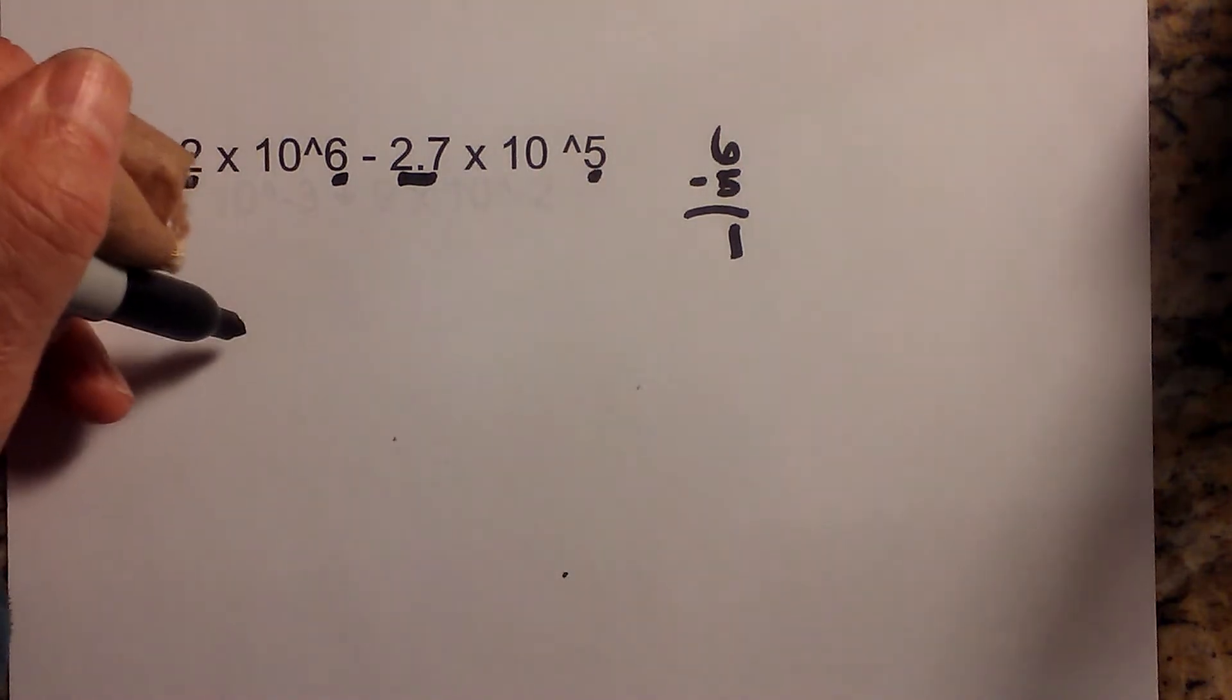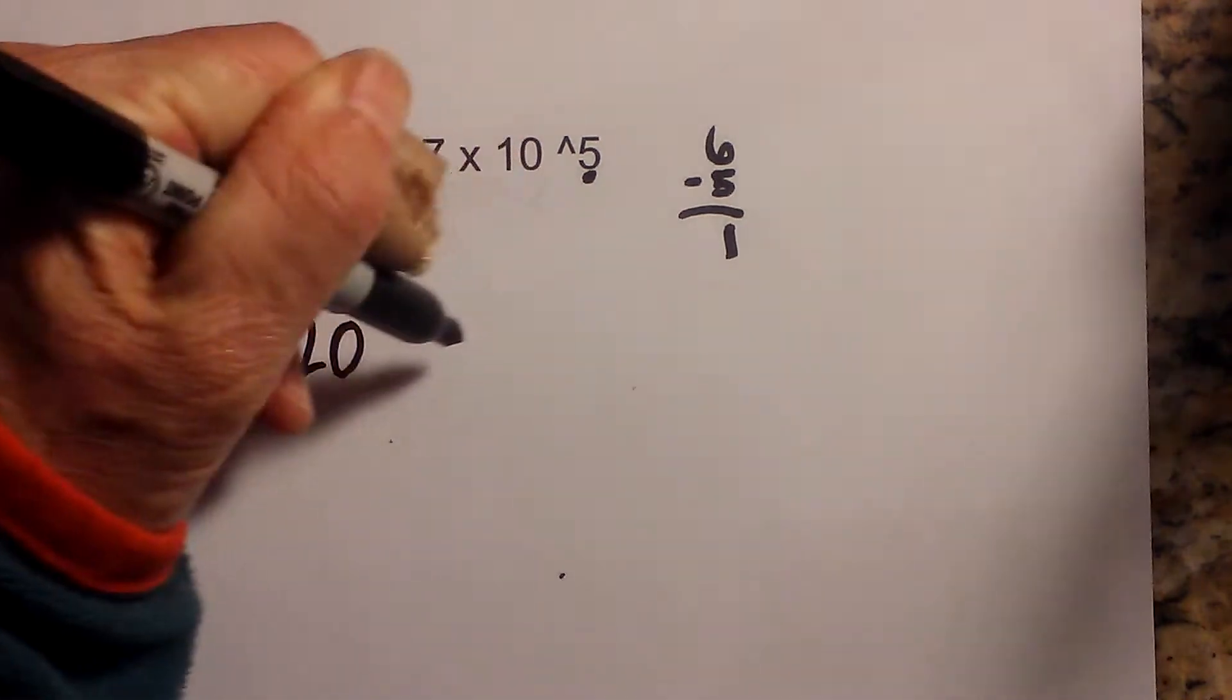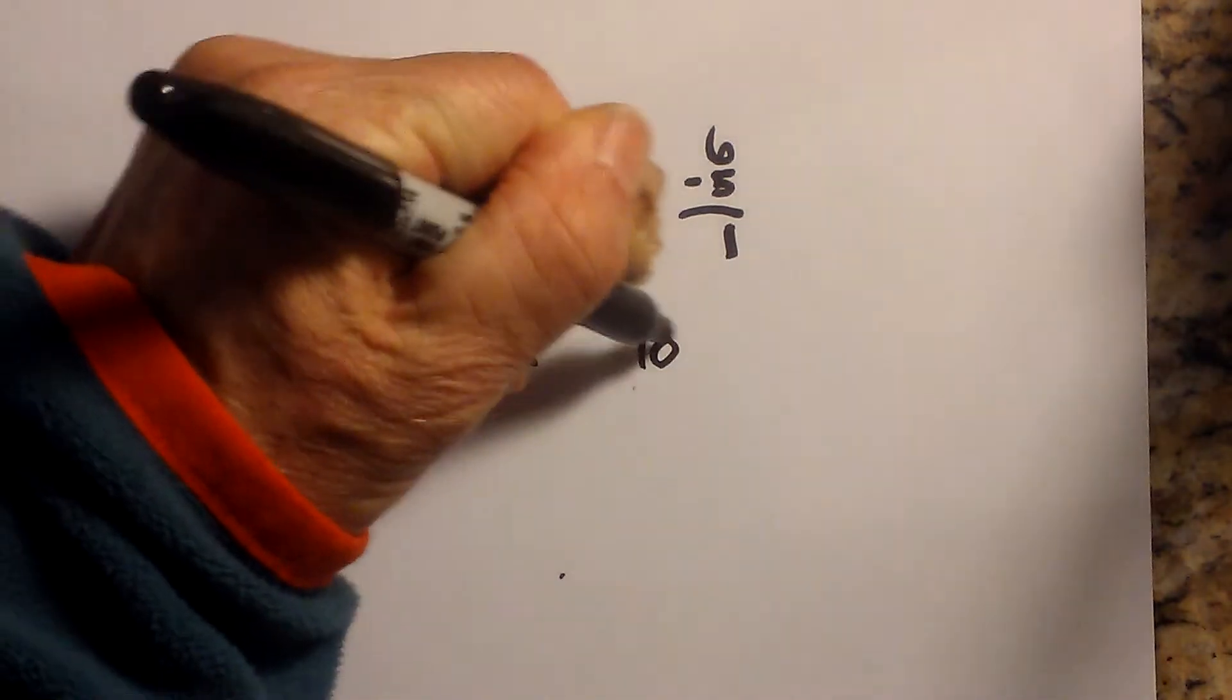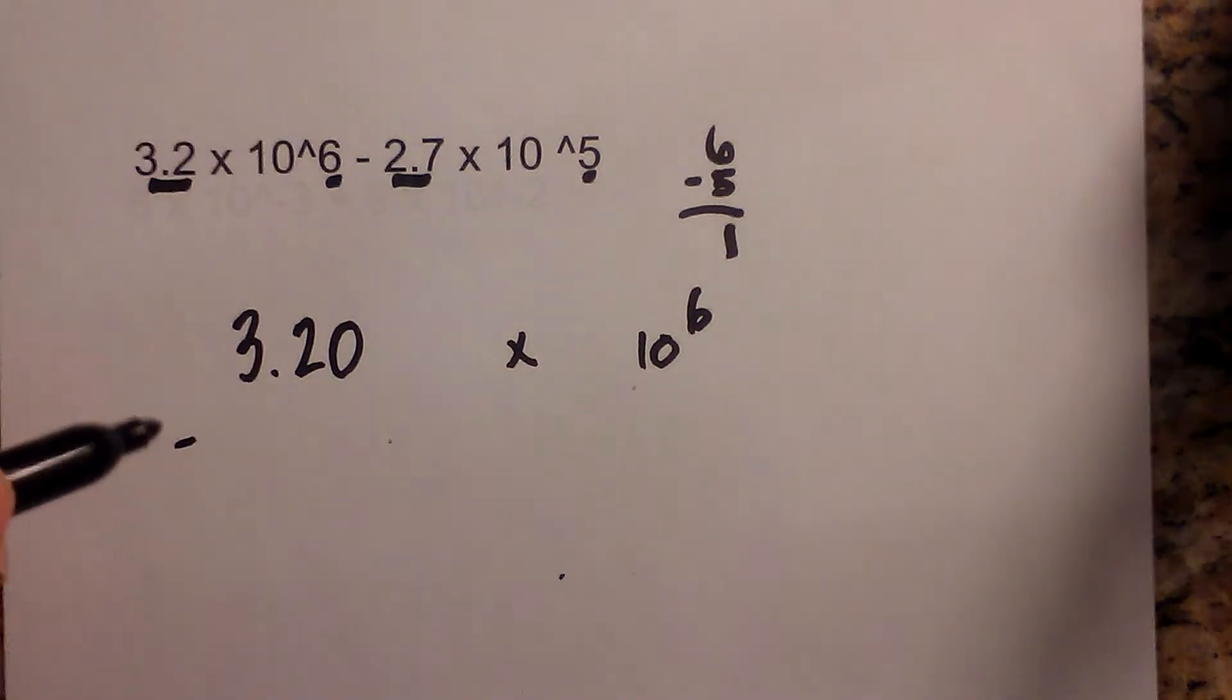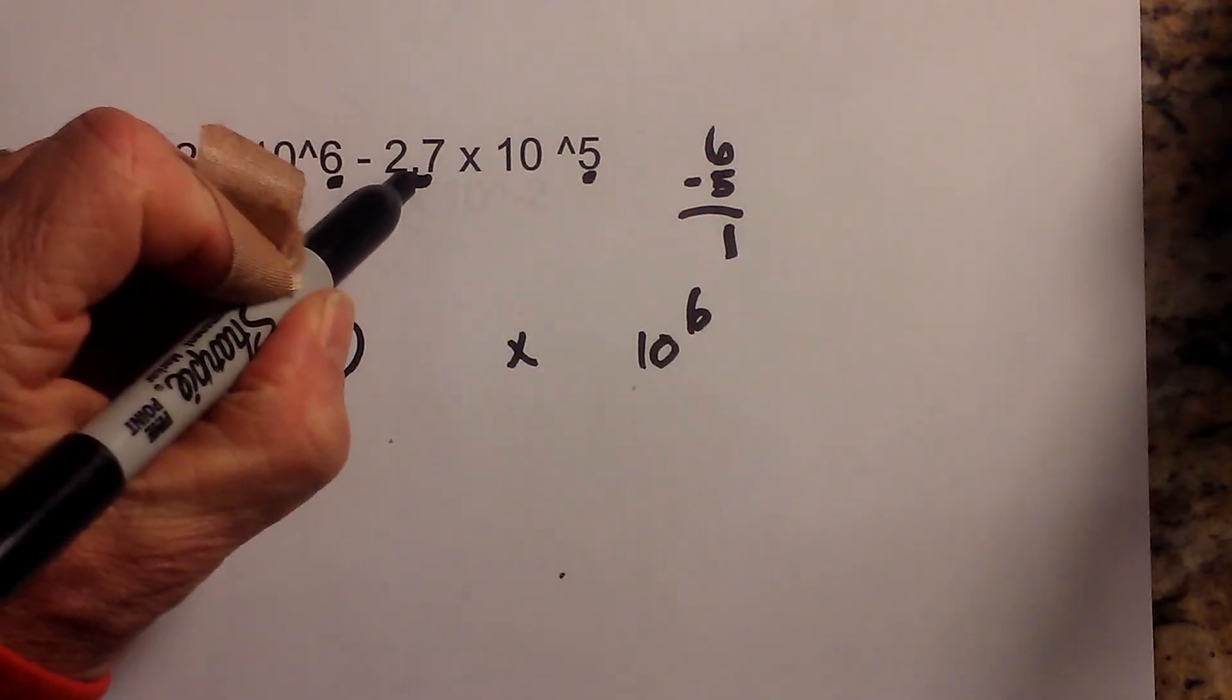So now I'm going to rewrite this. I'm going to have 3.20 times 10 to the 6 minus, and I need to move the decimal of the 2.7 to the left. So the 2.7 will become 0.27.